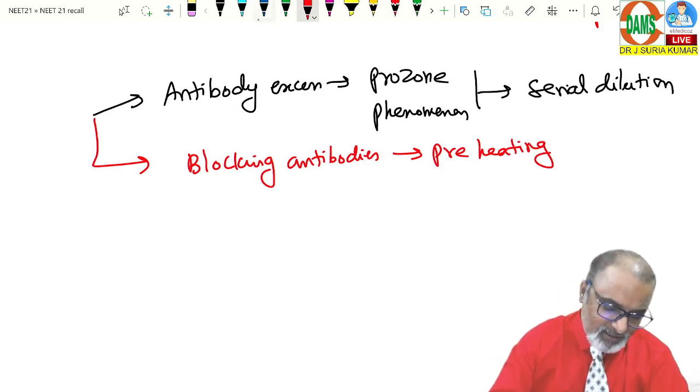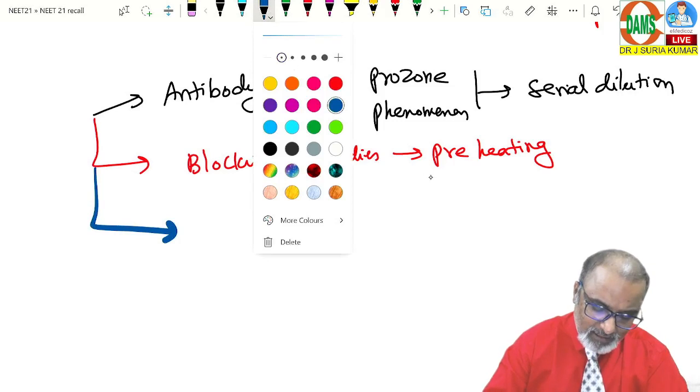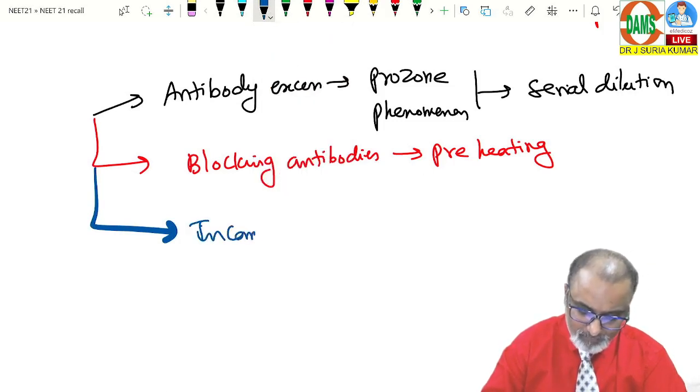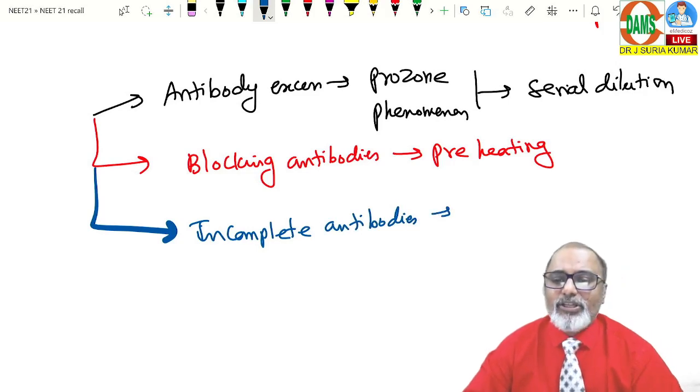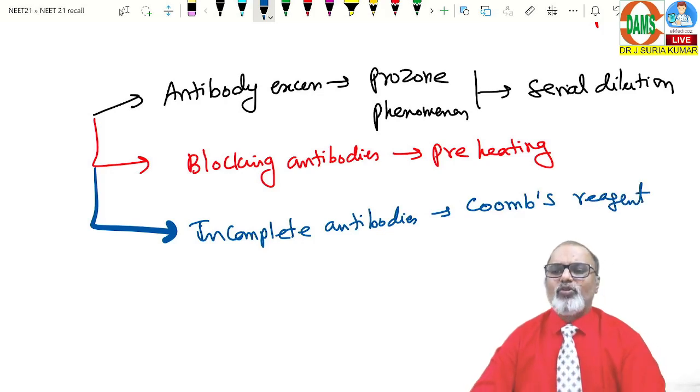Number three is incomplete antibodies. When incomplete antibodies are there, you need to use anti-human antibody, Coombs agent. Coombs reagent. It is nothing but anti-human globulin. So these are the three possible causes we can get false negative.